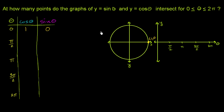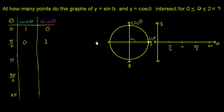At theta equals pi over 2, we are at the top of the unit circle. That coordinate is (0, 1), so cosine of theta is 0 and sine of theta is 1 — the y-coordinate right over here.